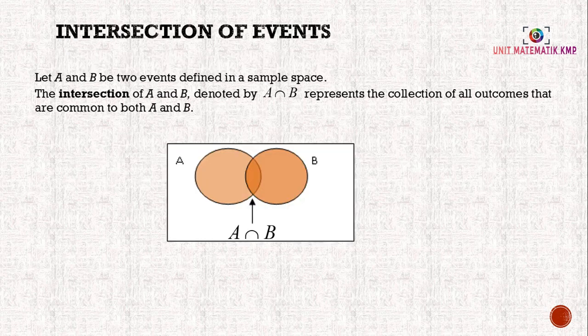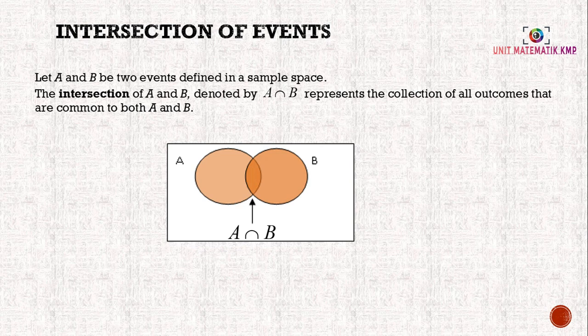So we will look at the intersection of events. Let A and B be two events defined in a sample space. The intersection of A and B, denoted by A ∩ B, represents the collection of all outcomes that are common to both A and B. In the middle here, we call it A ∩ B.